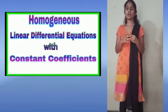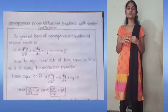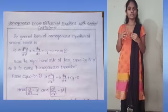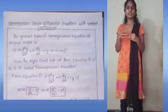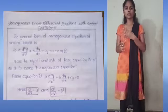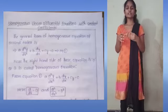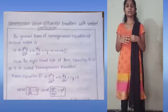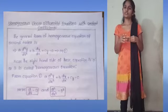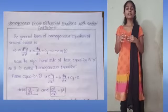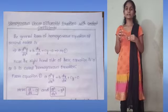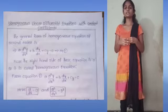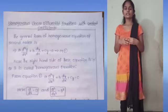We will discuss this topic. First, the general form of homogeneous differential equation is A·D²y/dx² plus B·dy/dx plus Cy equals 0. Here, the right side being equal to 0 is what makes it a homogeneous equation. In place of dy/dx and d²y/dx², we substitute D and D² respectively.